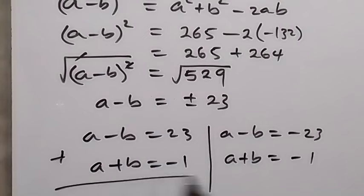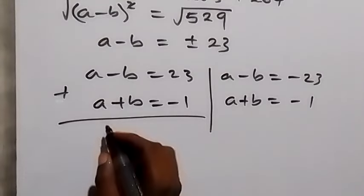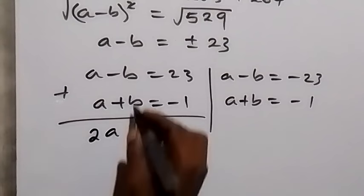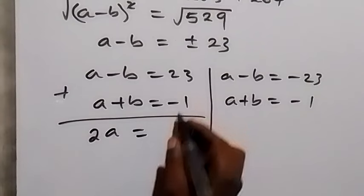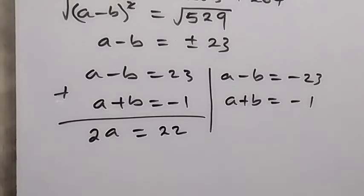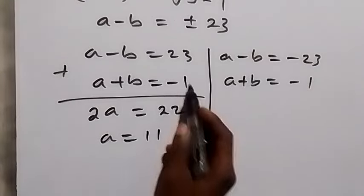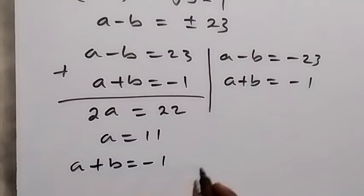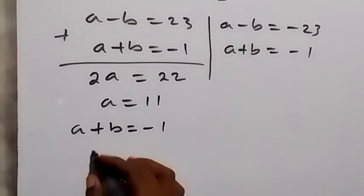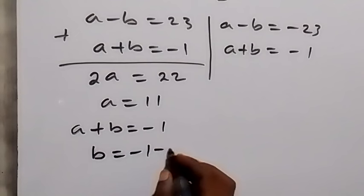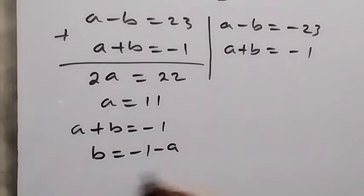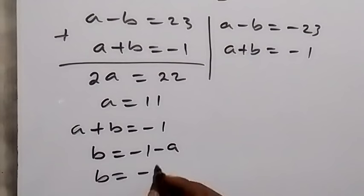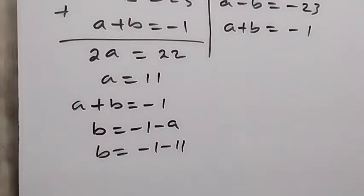For the first case: adding a minus b equals 23 and a plus b equals minus 1, the b's cancel, giving 2a equals 22, so a equals 11. Then from a plus b equals minus 1, we get b equals minus 1 minus a, which is minus 1 minus 11, so b equals minus 12.